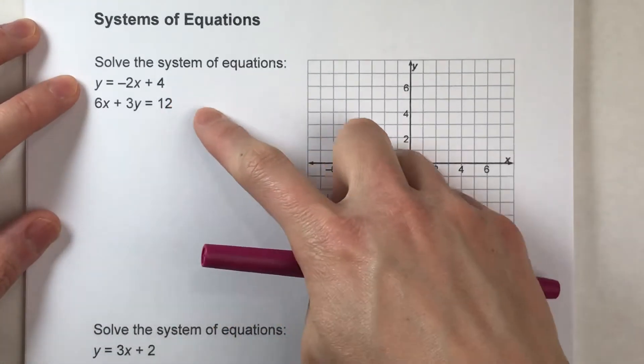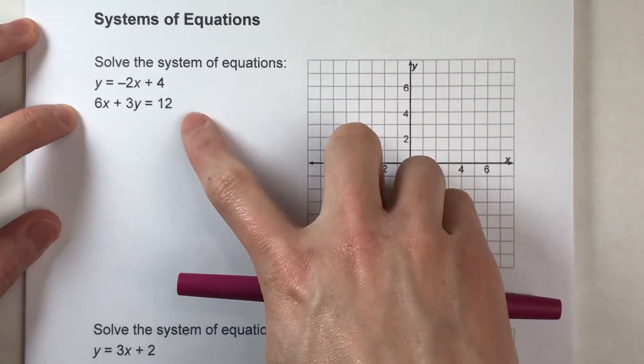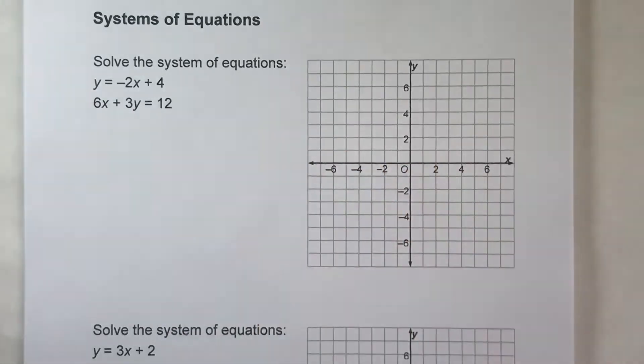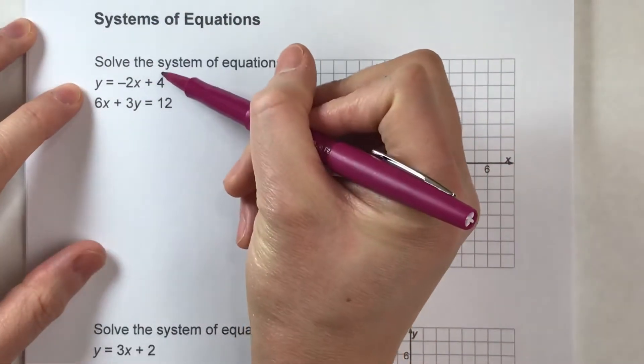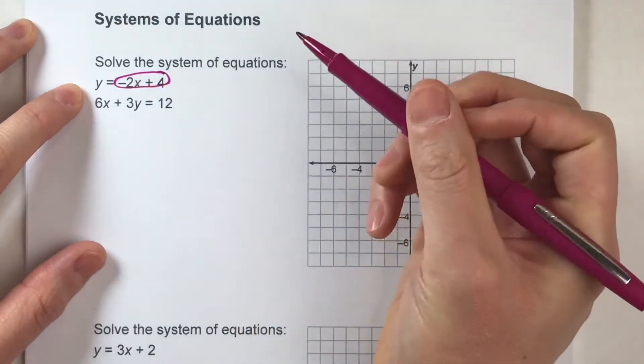For my first system of equations, I've got y = -2x + 4 and 6x + 3y = 12. And since one of the equations has y equals, this is going to be an easy substitution situation.